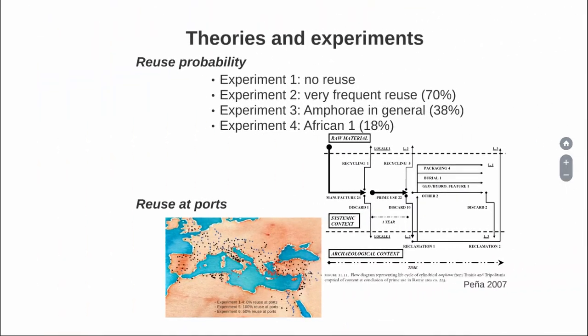There are two key theories I will explore. On one hand, differences between theorized probabilities of reuse. Some people who deny it happened say there is a 0% probability of reuse — this type of amphora was never, ever reused. Or there is 100% reuse — it's really, really frequent, it happened all the time, which is something almost no one says. Then there are people who are more pragmatic, like Theodore Pena, who published a model of the life cycle of amphorae, who argues that in some cases like African 1 he theorizes an 80% probability of reuse in the port of arrival, and for amphorae in general, a 38% probability. That's the first set of experiments.